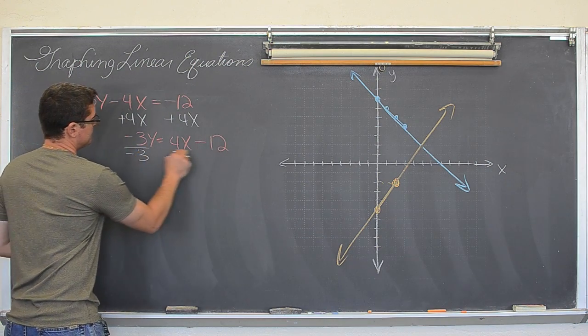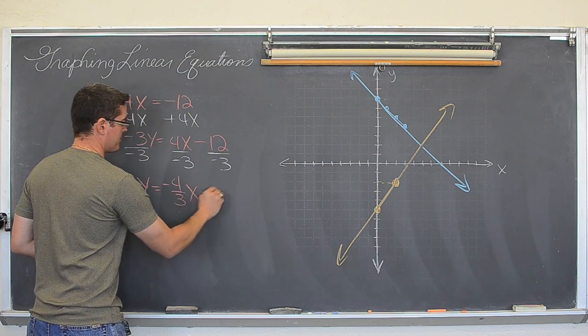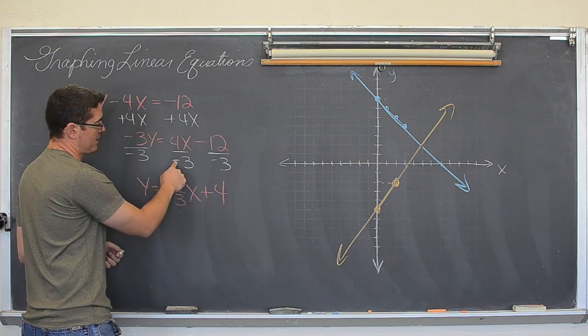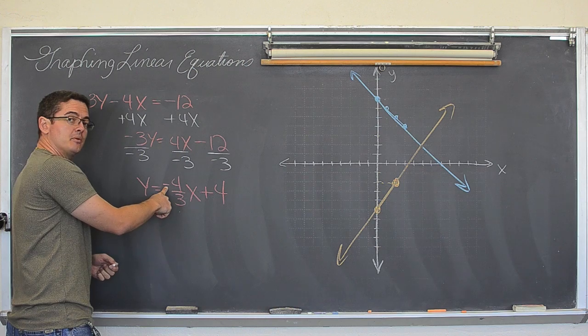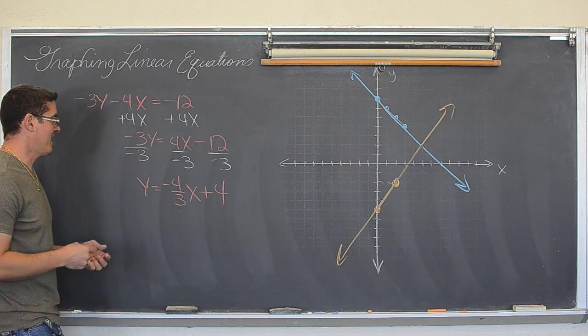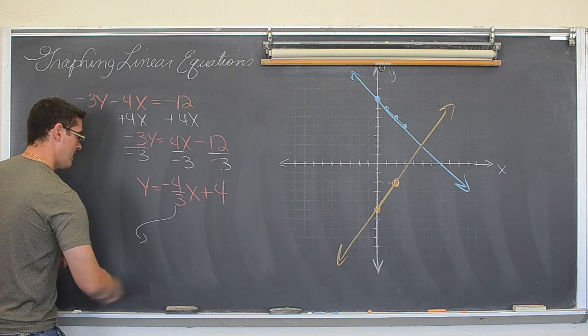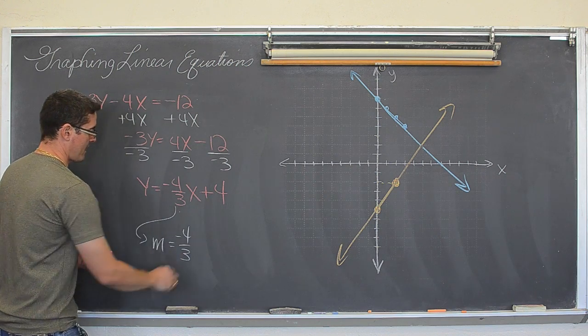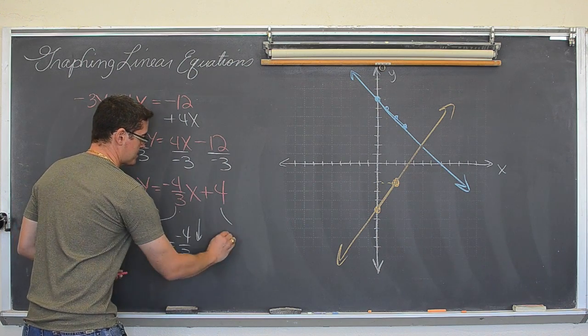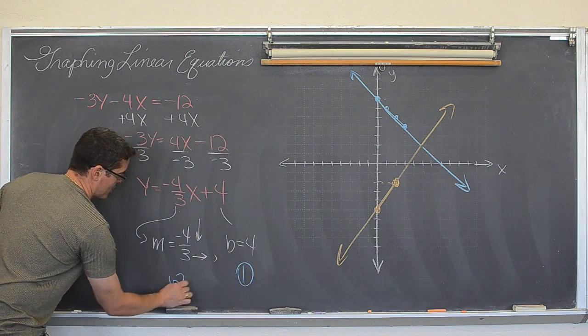Divide everything by negative three and we get y is equal to negative four thirds x plus four. Now you may note that this negative here, when I divide everything by negative three, the negative is on the bottom of the fraction. And now I have written it on the top. Well that is because it does not matter where you write the negative sign. You can put it anywhere you want as long as there is only one negative sign in the fraction. So now y is by itself. So I can find the slope which is in front of the x. And that slope is negative four thirds. And so we are going to go down four and over three. And the y intercept always is the constant at the end of the question. So b, the y intercept is equal to four. And again, you want to do the y intercept first and the slope second.